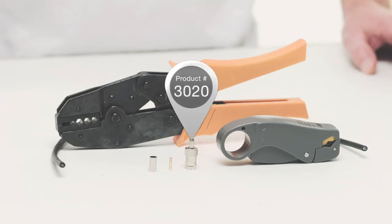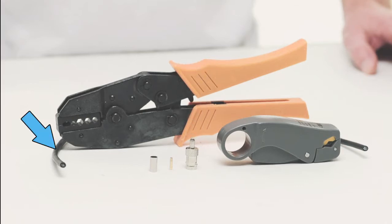For today's project I'm going to need RG58 coax cable, a three-piece BNC female connector, coax strip tool, and a crimp connector.